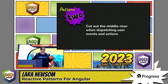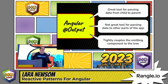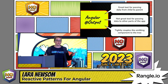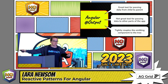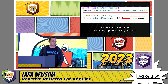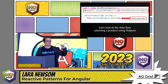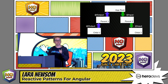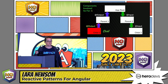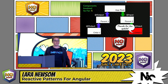Pattern number two: cut out the middleman when dispatching user events and actions. Angular outputs are a nice tool to pass data from a child up to the parent, but they are not a good tool for passing data up to other parts of the application. You're tightly coupling your component tree if you're chaining events. For selecting a product, child one emits an event that has to go up to parent one, up to the route, app route, back down through inputs to parent two, back down to child two — five components just to get data from child one to child two.